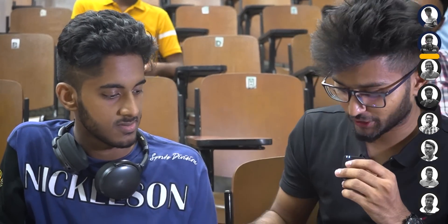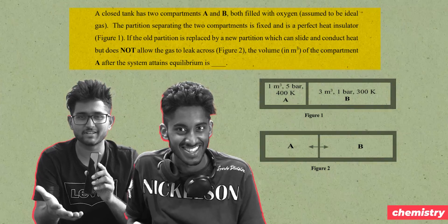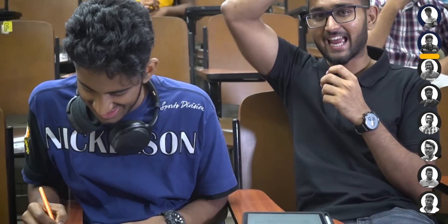So Matthew, which subject do you want to take? I'll take chemistry. Here's your question and pen. A closed tank has two compartments, A and B, both filled with oxygen. Assume the partition separating the two compartments is fixed. This is one of the famous questions — if you're preparing for IIT JEE, you definitely know this one. It's been more than two years since Matthew might have solved this. How much time will you take? About 10 minutes.